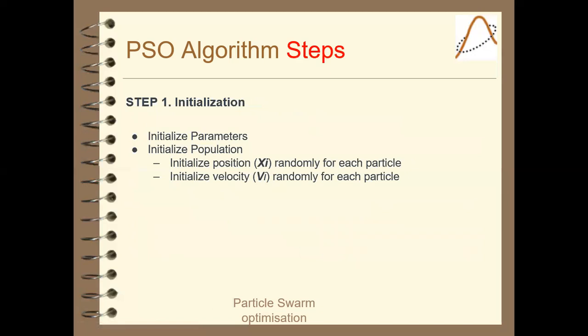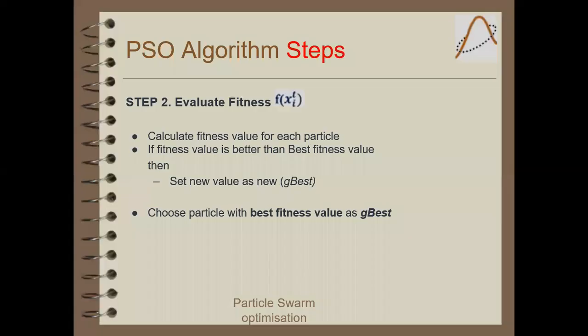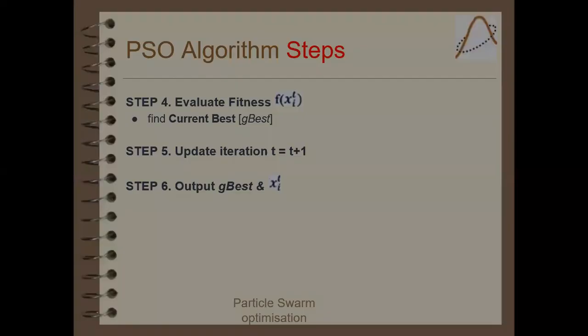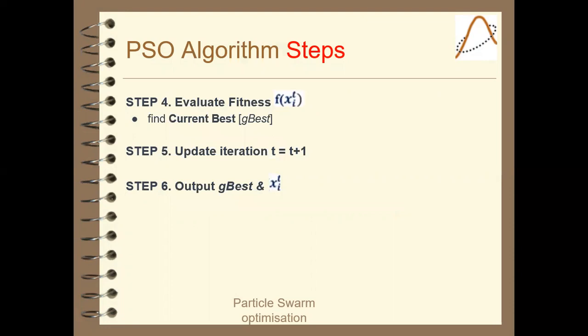In step 1, we initialize a random population. In step 2, we evaluate the fitness. In step 3, we update velocity and position according to the results of our fitness function. We then evaluate fitness again and update the iteration until we find the global best solution.